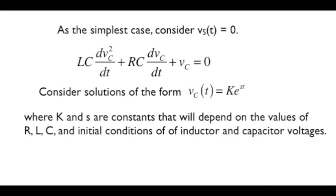With v sub s equal to zero, the right-hand side of the differential equation is zero. For that type of equation, the solutions are of the form k e to the st, where t is time, s is a constant that depends on the values of R, L, and C, and k depends on the initial conditions.